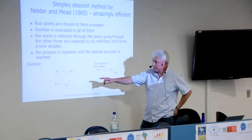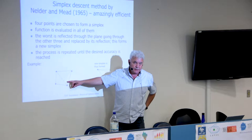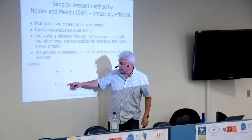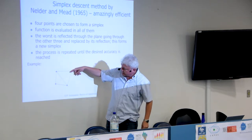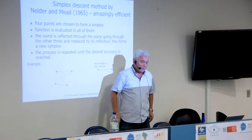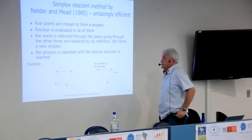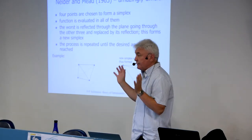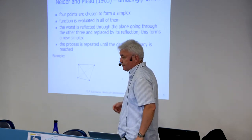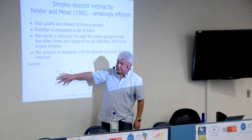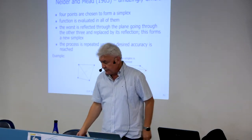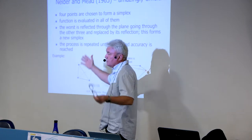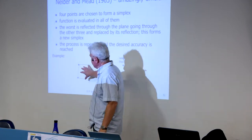The idea starts with a geometrical figure called a simplex — like the tetrapak milk container, which is a pyramid with a triangular base and four faces. We form this simplex in the space of independent variables. In a 3D space, four points form this figure. The size depends on the search ranges, perhaps one twentieth of the total search volume.